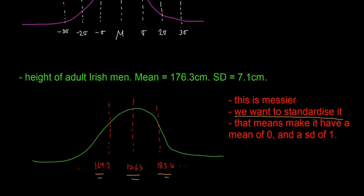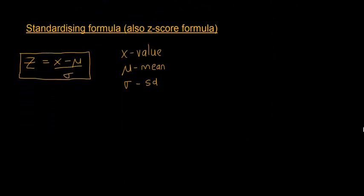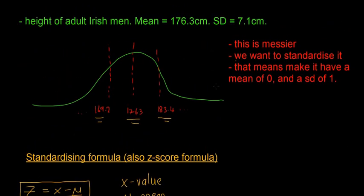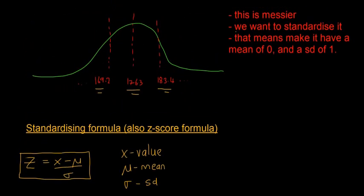We want to standardize it, which means we want to make it have a mean of 0 and a standard deviation of 1, because that's going to be really easy to deal with. We're going to use the standardizing formula, which is also the z-score formula. The formula is: z equals x minus mu divided by sigma. Here, z is the z-score, x is the value in question, mu is the mean, and sigma is the standard deviation.